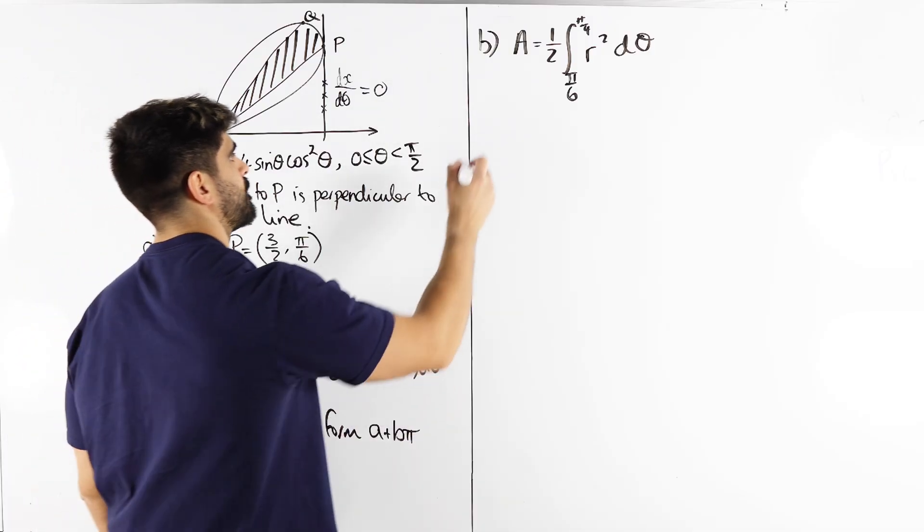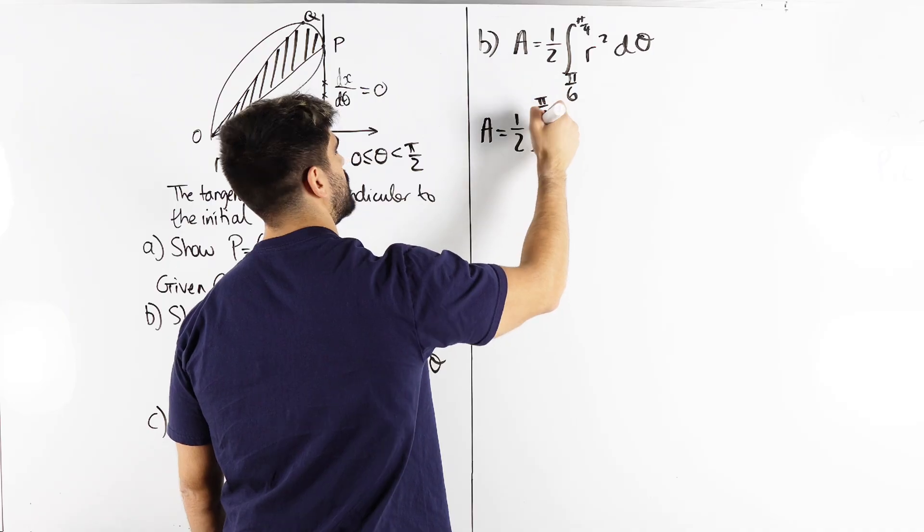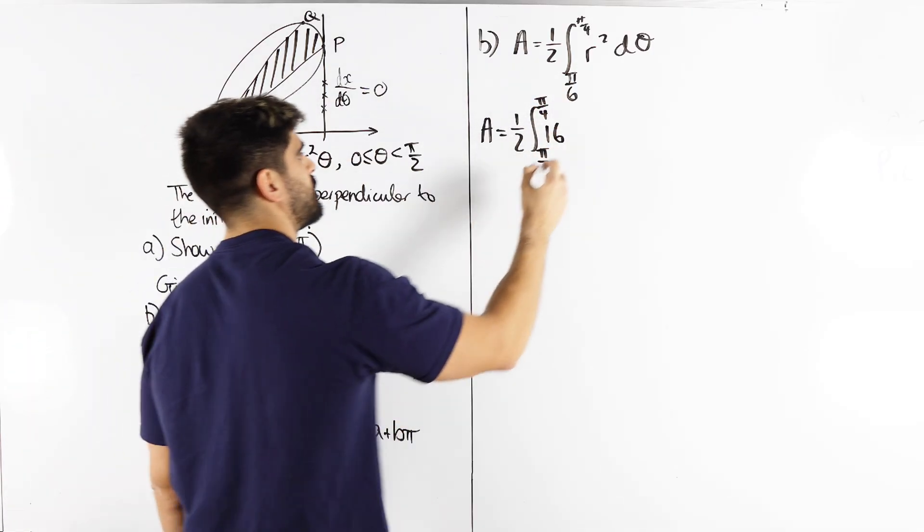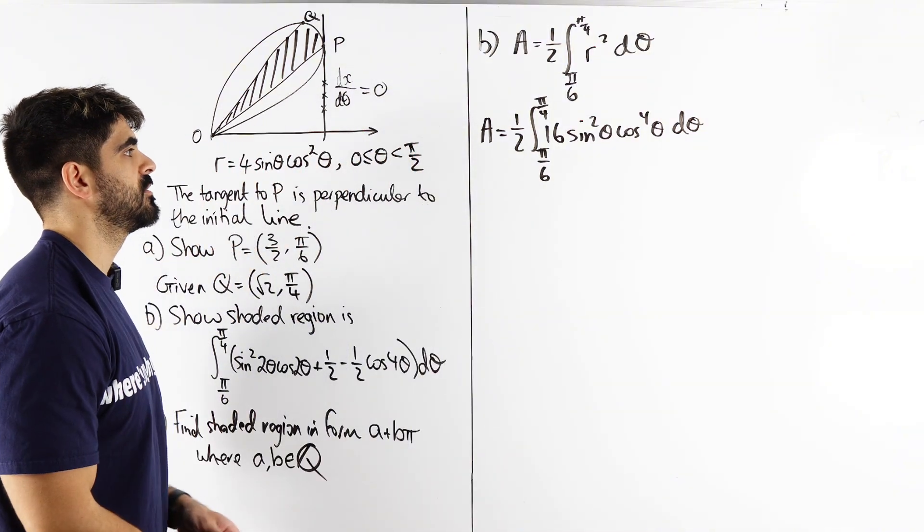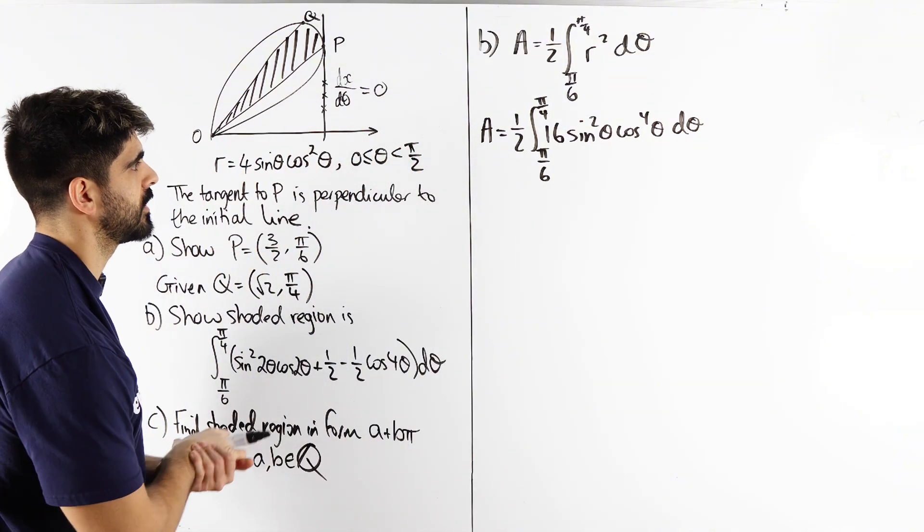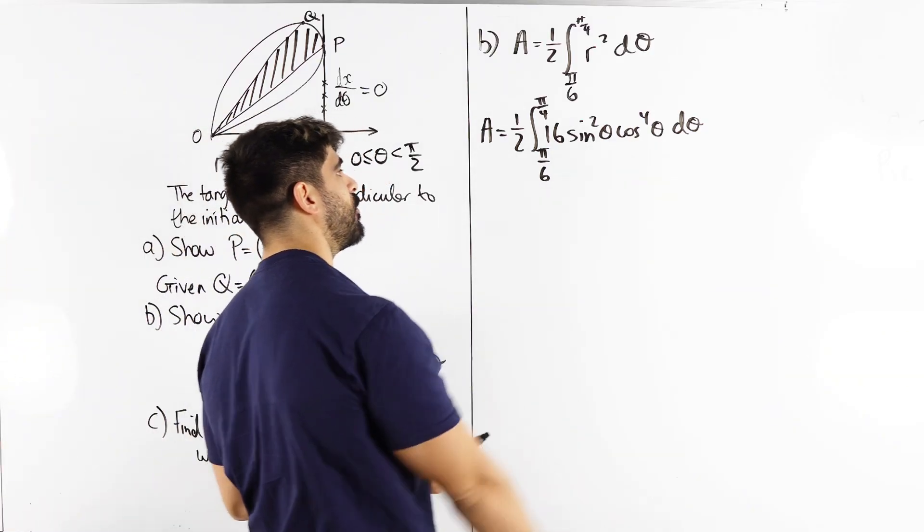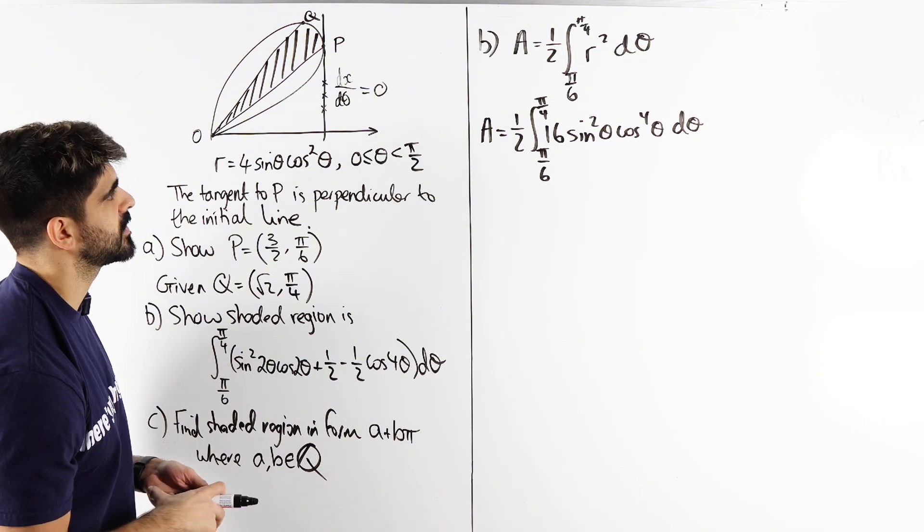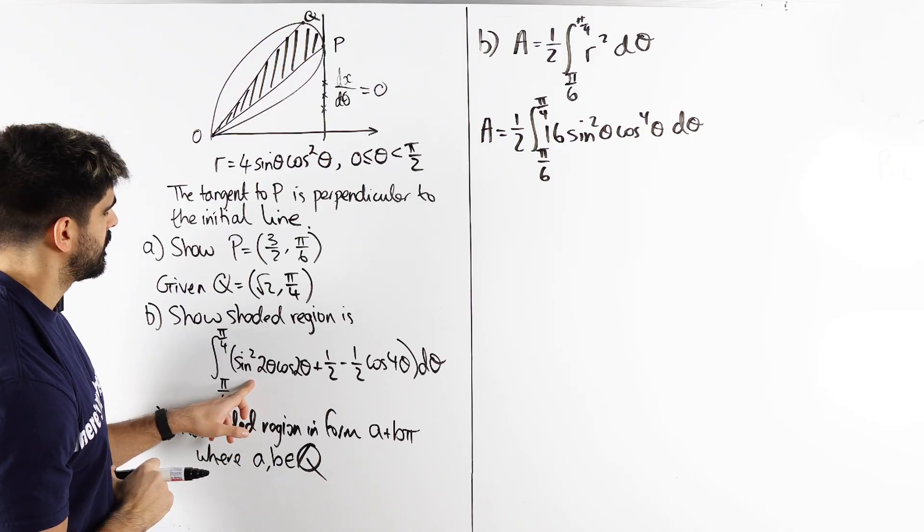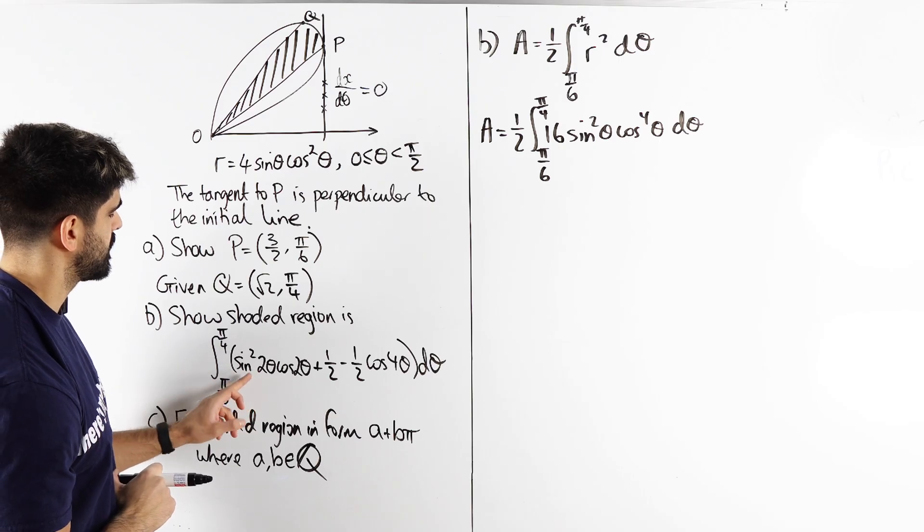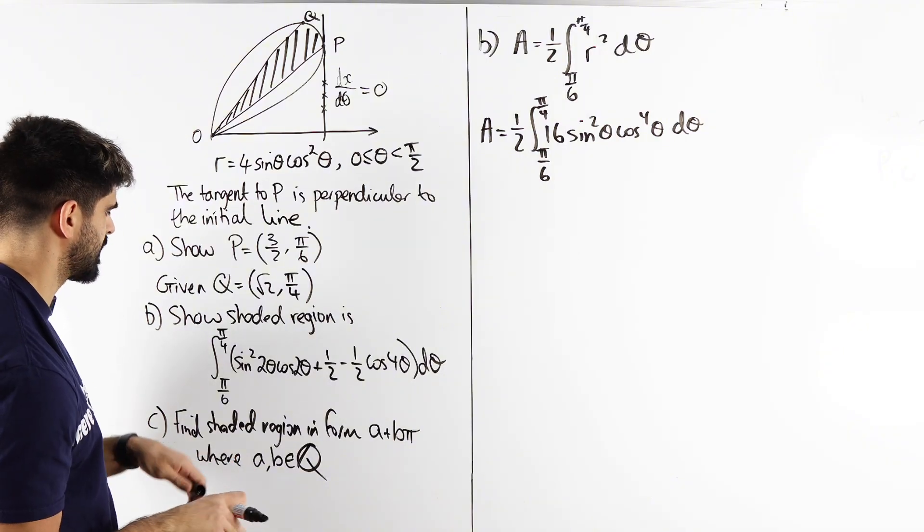So you've got to square this. So we have the area is a half integral pi over six pi over four of sixteen. So sixteen sine squared cos to the four d theta. Half of sixteen eight. I guess that's not even that important right now. Looking at what they want us to do cos to the power of four theta. I'm assuming that's coming from cos to the power of four maybe. But they do have a sine squared two theta. So I think I'm going to think about this first cos sine squared two theta. If I can somehow make that appear here hopefully everything else can maybe appear itself.